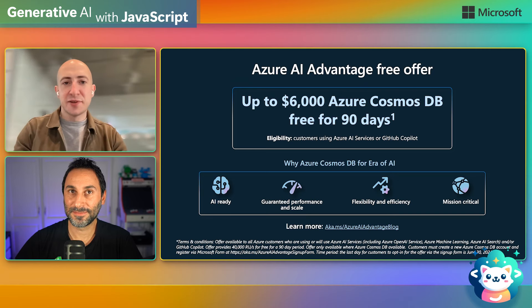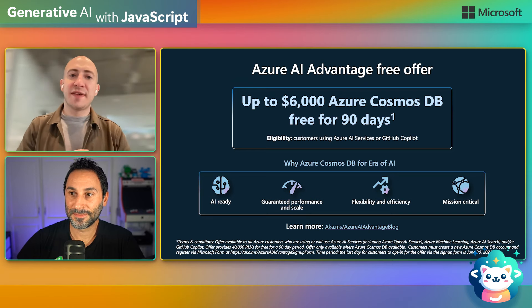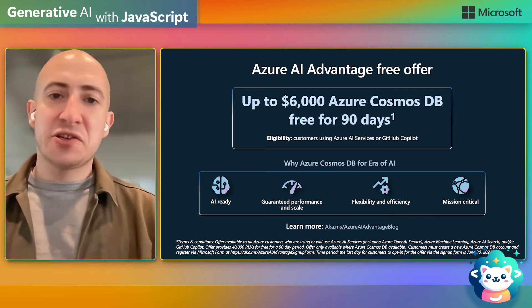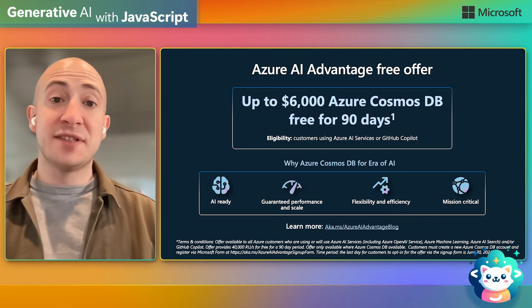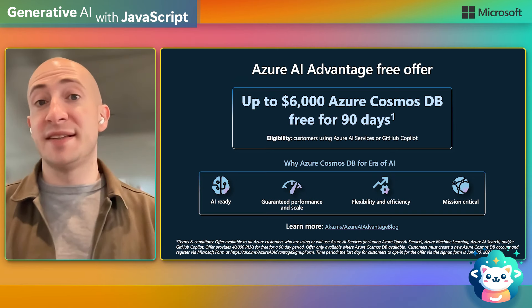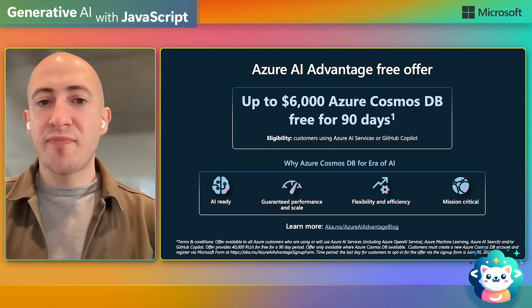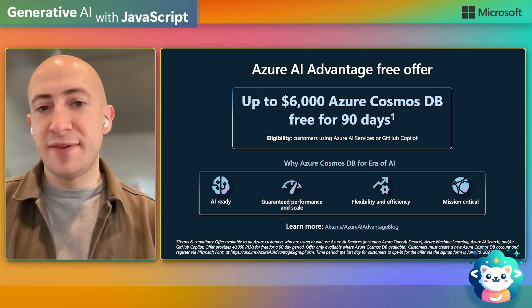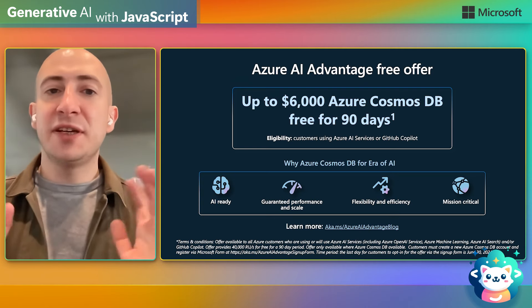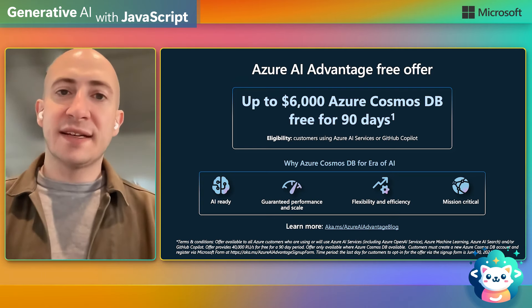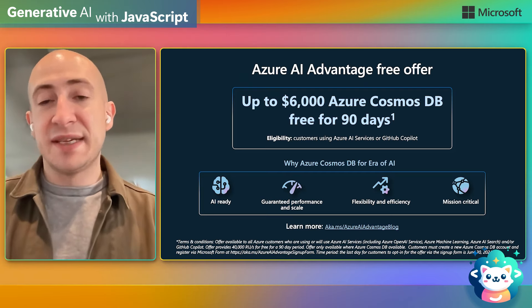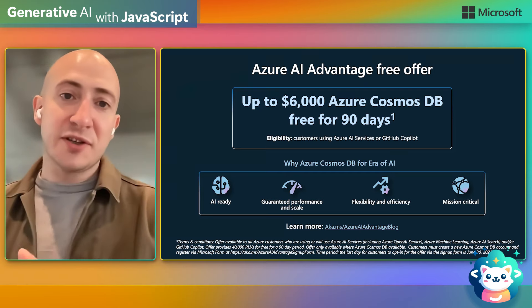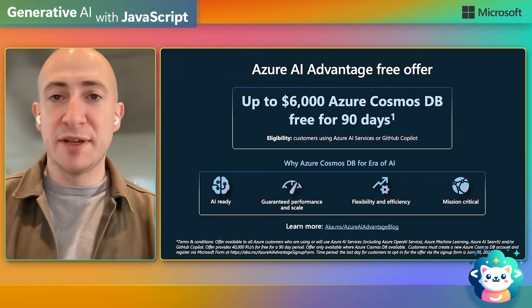We're really excited to announce the continuation of the Azure AI Advantage free offer. If you're using Azure AI Services or GitHub Copilot, you may be eligible for up to $6,000 free Azure Cosmos DB credit for 90 days. Check out aka.ms/AzureAIAdvantage blog for full details. It's already very cost-effective to get started with Cosmos DB, but as you bring your applications from development to production, this is a great incentive to keep using Cosmos DB for your AI apps. In the next video, we'll see all the other Azure services and tools you can use for your AI applications.